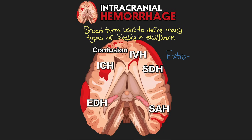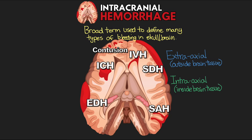The first is what we call extra-axial hemorrhage, where we have bleeding outside of the brain tissue. The other is intra-axial hemorrhage, where we have bleeding inside the brain tissue. There are six different bleeds total: three extra-axial — the epidural hematoma, the subdural hematoma, and the subarachnoid hemorrhage — and three intra-axial: intraventricular hemorrhage, contusion, and intracerebral hemorrhage.